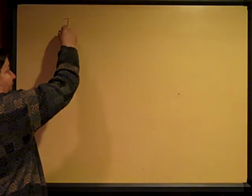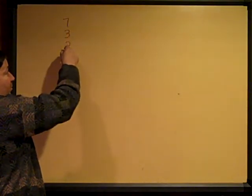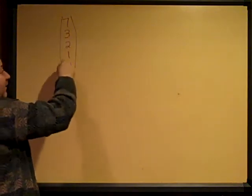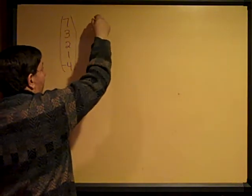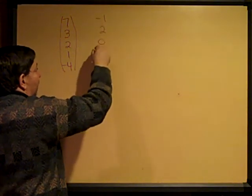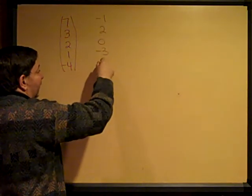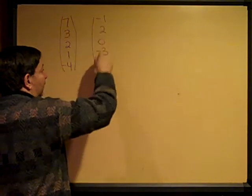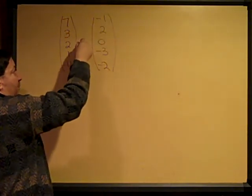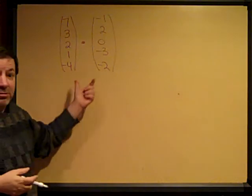I'm going to show you how to multiply two matrices, but before that we need to talk about the dot product. We have two lists of numbers: 7, 3, 2, 1, negative 4, and the second list: negative 1, 2, 0, negative 3, negative 2. We want to compute the dot product between these two lists of numbers.